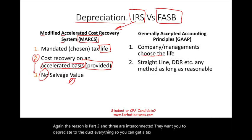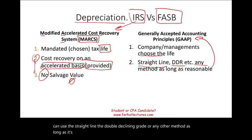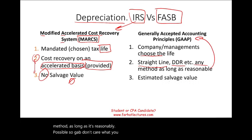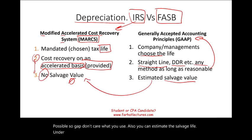Under GAAP, you can use the straight line, the double declining rate, or any other method as long as it's reasonably possible. GAAP doesn't care what you use. Also, you can estimate a salvage value. Under IRS, there's no salvage value — it's zero.